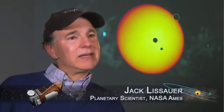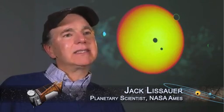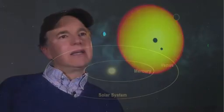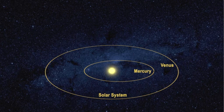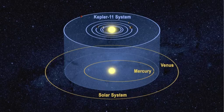The Kepler 11 planetary system is amazing. It's amazingly compact. It's amazingly flat. There's an amazingly large number of big planets orbiting close to their star. We didn't know such systems could even exist.